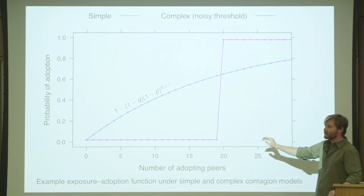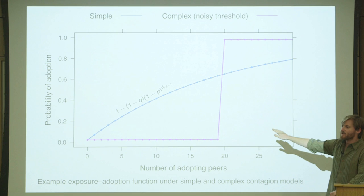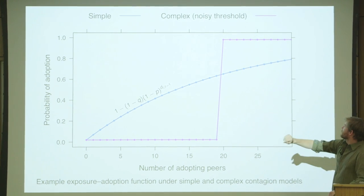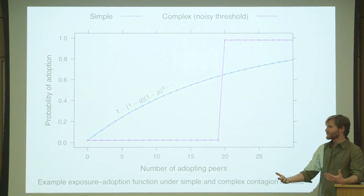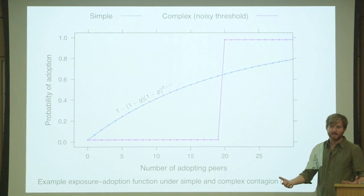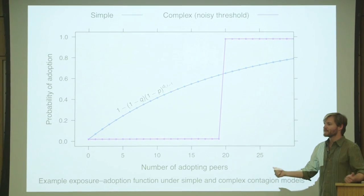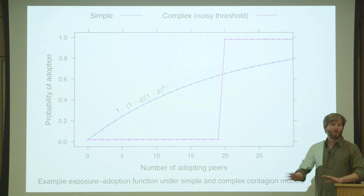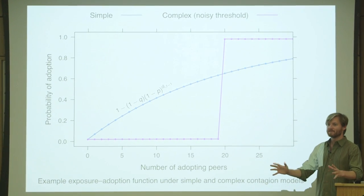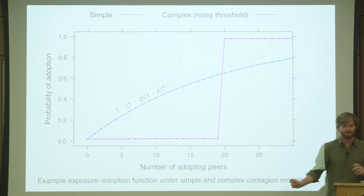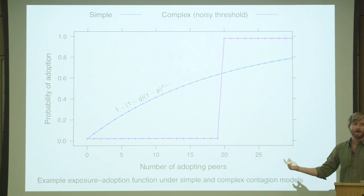That's very different than what economists and game theorists would tell us. We could have something much more like a step function, where there's some payoff that I get from adopting a technology like fax machines. Once my payoff is positive, then I will adopt the technology almost certainly. Once I have enough friends using fax machines, the benefit to me is high enough, therefore I'm going to shell over the money for the fax machine.